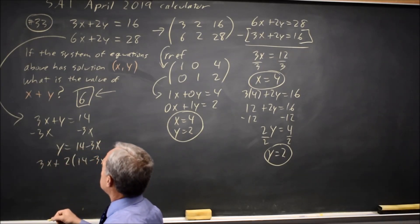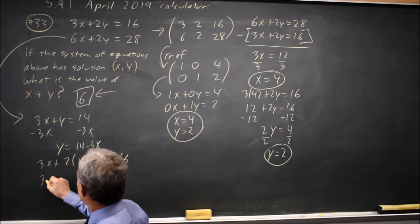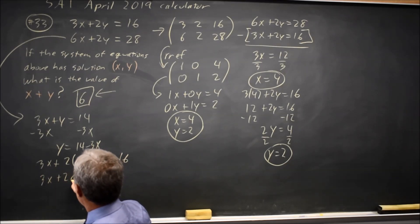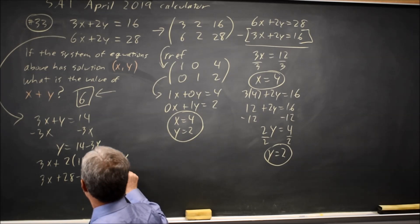3x plus twice 14 minus 3x equals 16. I probably should not have solved for y. I should have stuck with 2y. But it still works. 3x plus 28 minus 6x equals 16.